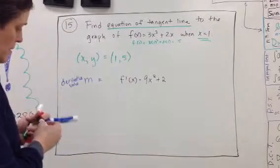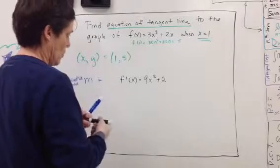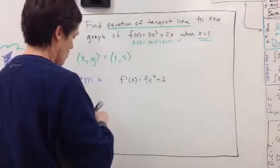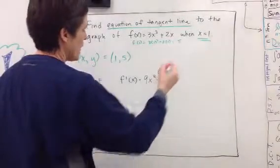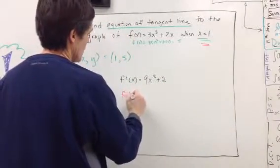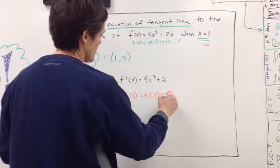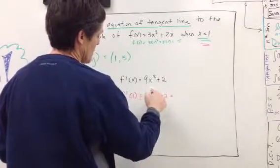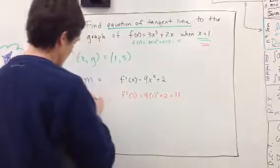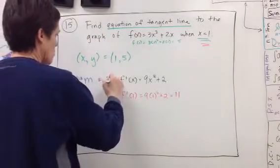Now I need my derivative value when x equals 1. We need to find that derivative value at the same location. The derivative when x equals 1 is 9 times 1 squared plus 2, which is 9 plus 2, which is 11. My derivative value is 11, so my slope is 11.